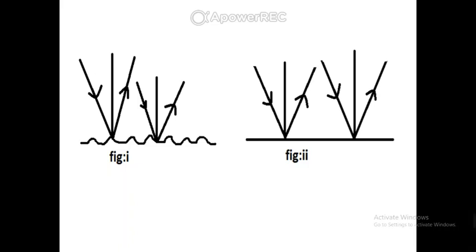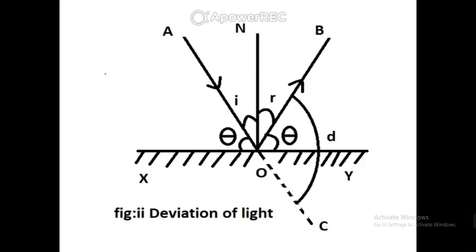Now I want to show the derivation for the angle of deviation. First, I want to define the glancing angle. Glancing angle means the angle made by the incident ray with the reflecting surface. The angle made by ray AO with surface XO is called the glancing angle.